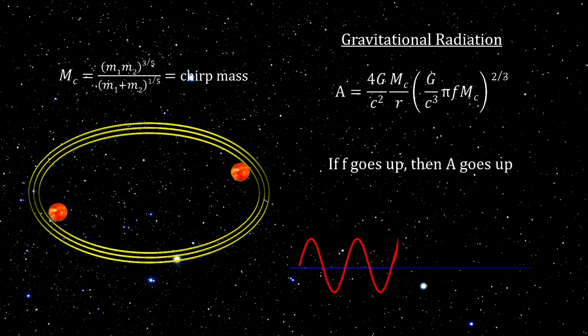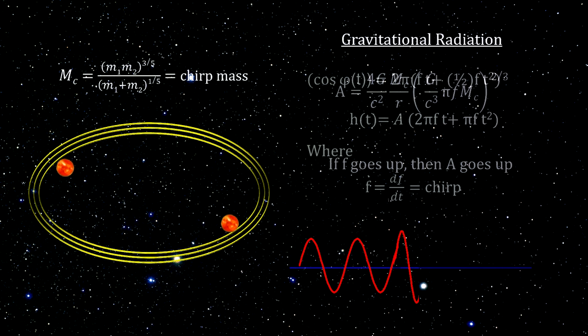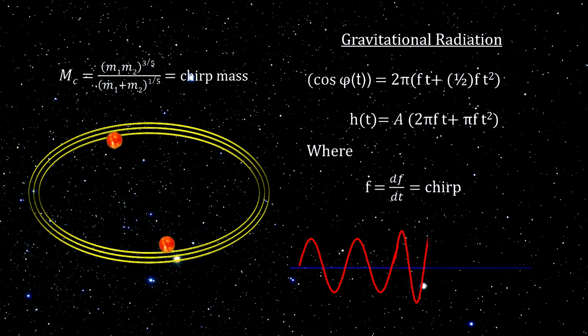And the wave equations show that the amplitude of the gravitational wave will increase with the frequency. The rate that the frequency is changing is called the chirp.